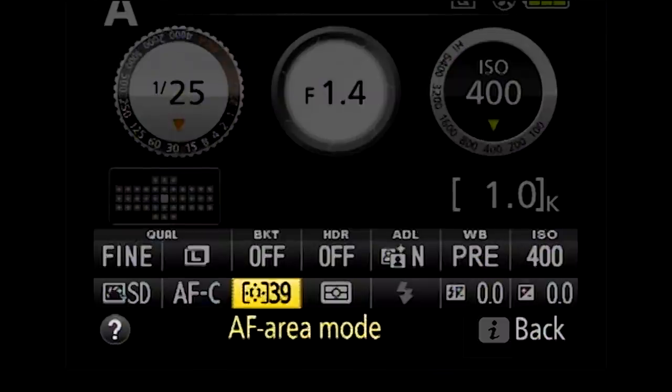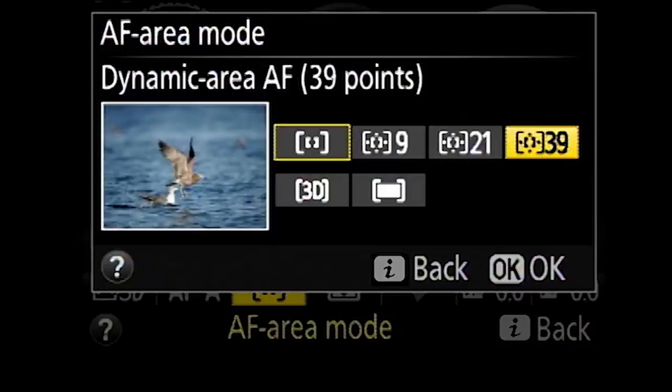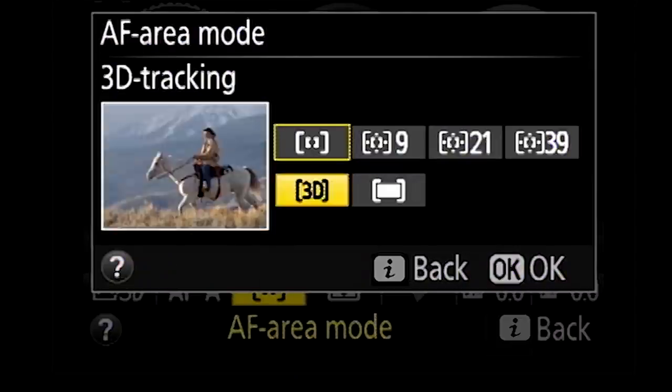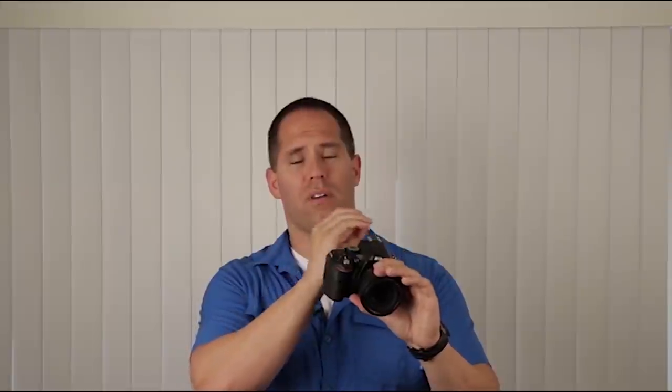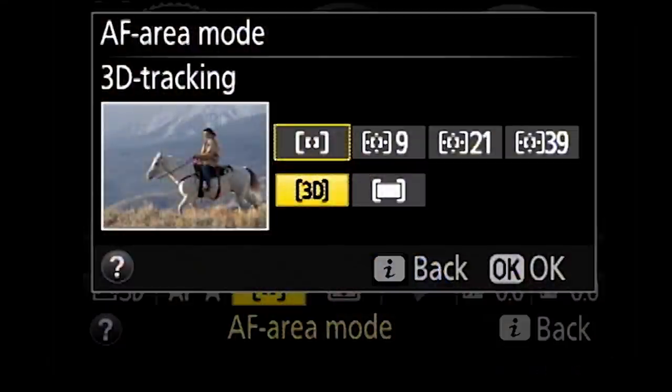And D39 uses the entire set of focus points that we have. We have another very important focusing type called 3D focusing. This is new, it's cutting edge, and when it works it is a great tool. Essentially the 3D tracking allows us to put a square on a moving subject, and as that subject moves across the frame of the viewfinder, the camera will actually change which focus points it's using.